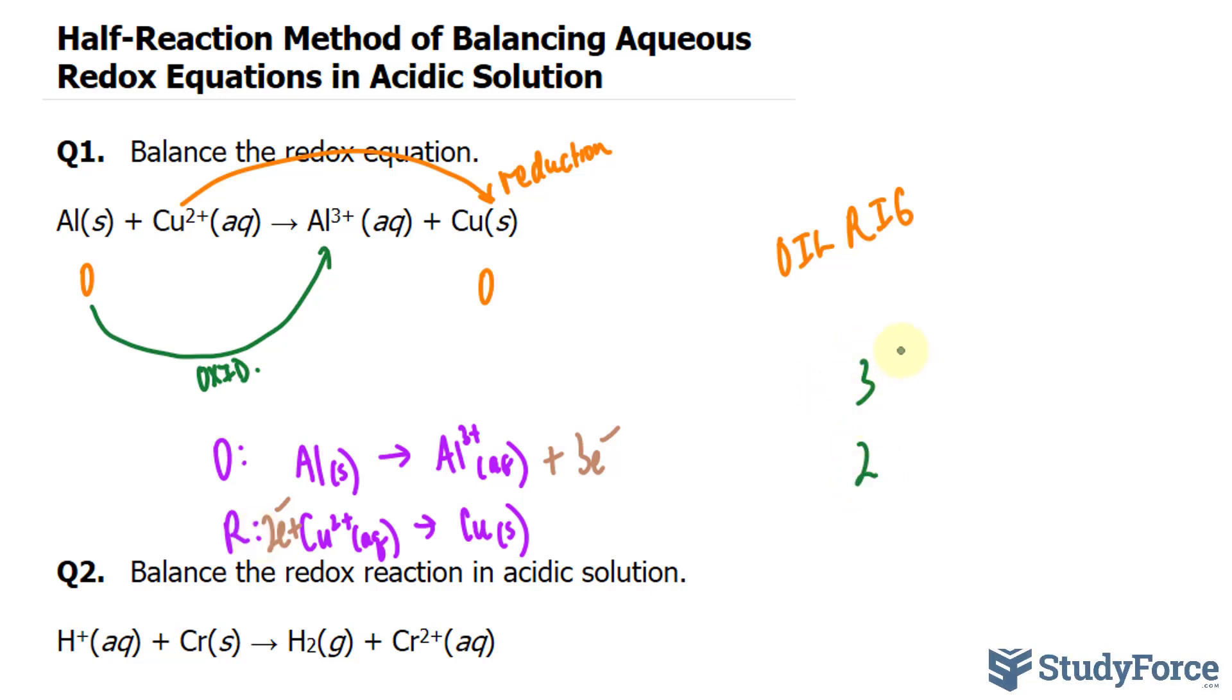Think of all the multiples of 3 and 2. We have 3, 6, this one is 4, 6. They'll meet at 6. That being said, I'll multiply this thing by 2 and this equation by 3.